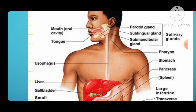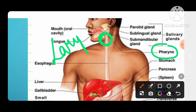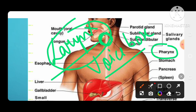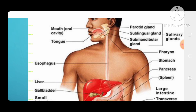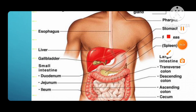Now we have to show you the structure of the pharynx. This pharynx is present here. We also have the larynx, whose function is called the voice box.